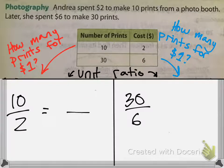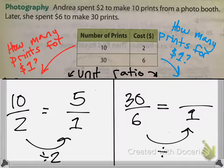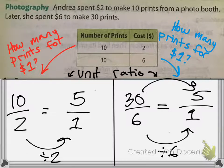I want to find out how many prints I get for one dollar. To go from 2 to 1, I divide by 2, so I do the same to the top and get 5. To go from 6 to 1, I divide by 6 and get 5. These are equivalent fractions — we also just divided by our greatest common factor.